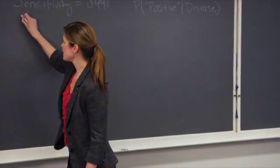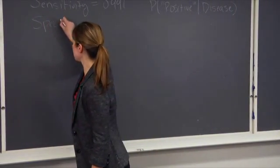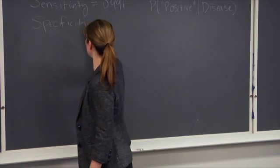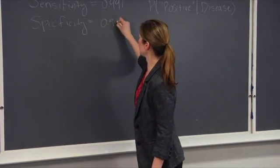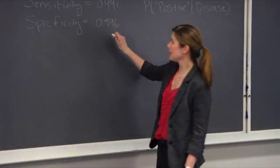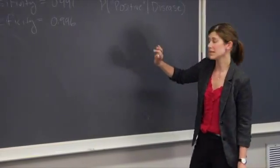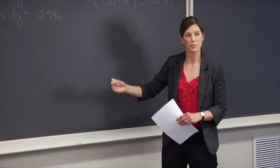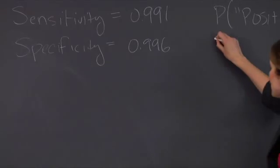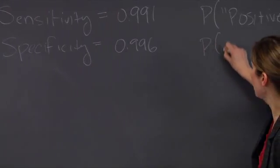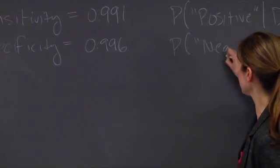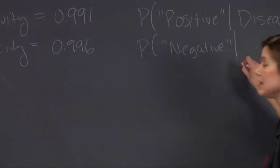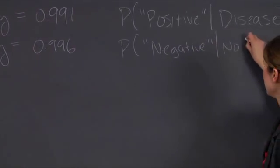The specificity of the OraQuick test is 99.6%, and we can think of specificity as sort of the complement to sensitivity. Specificity is the probability that a patient has a negative test result given that he or she does not have the disease.